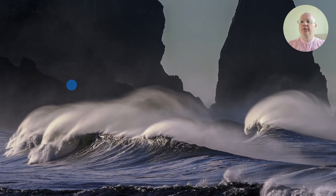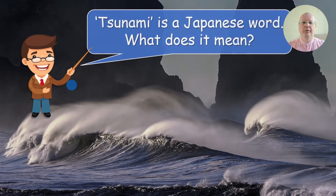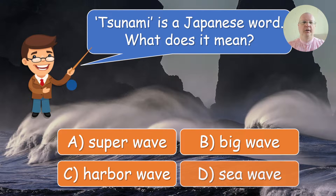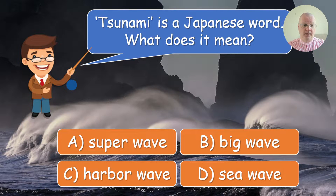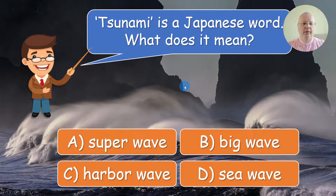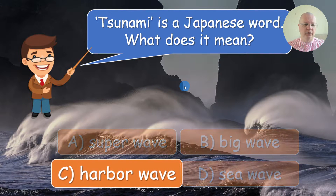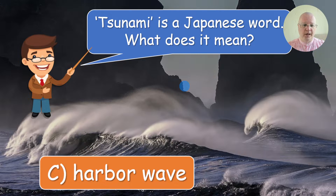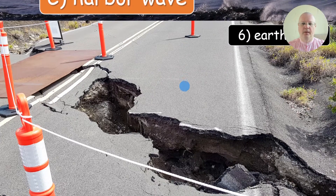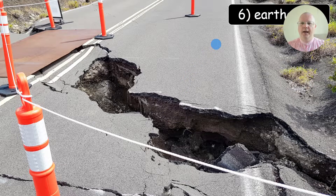Then you invite the next pair of students. Here's the next question: tsunami is a Japanese word — what does it mean? Is it a super wave, a big wave, a harbor wave, or a sea wave? The correct answer is that tsunami means harbor wave. The next and final natural disaster for today is the earthquake.